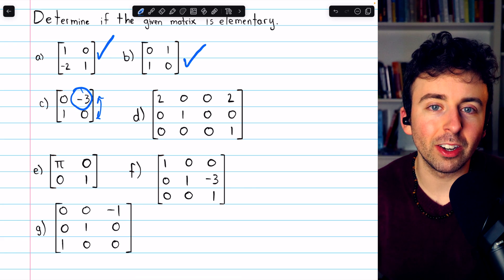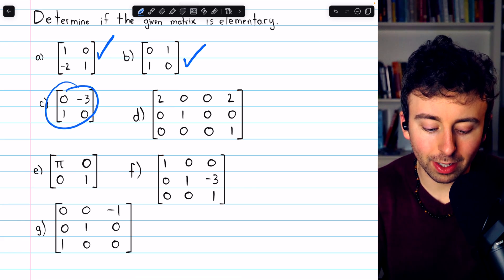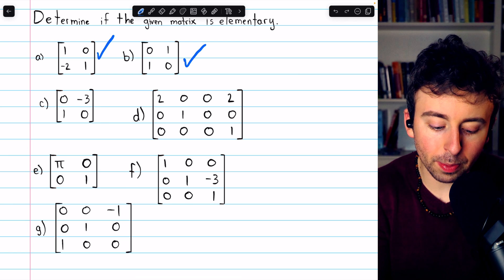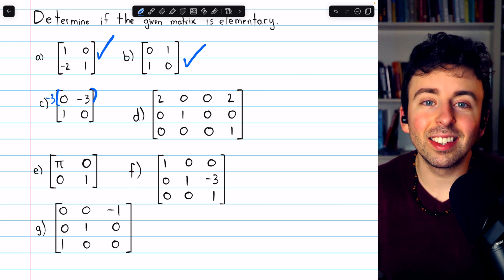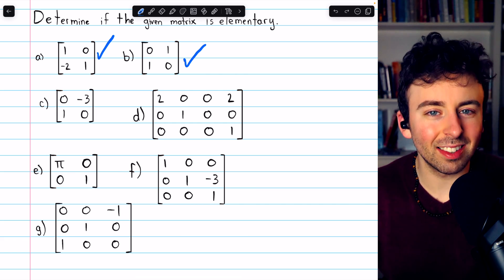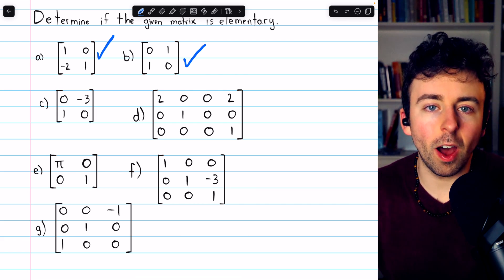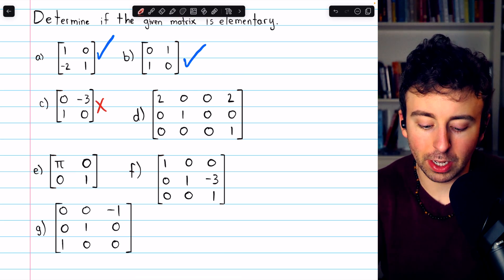Point is, there were two elementary row operations done to the identity to get to this matrix. Rows 1 and 2 were swapped, and then row 1 was multiplied by negative 3. Since this matrix could not be obtained from the identity by performing a single row operation, it is not elementary.